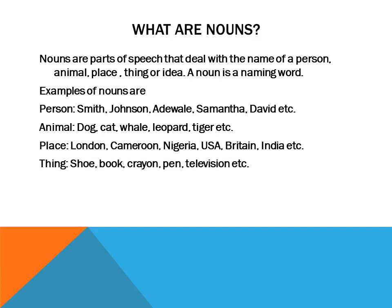Then we have things, like your shoe, book, crayon, pen, and television, and so on. Then, ideas — when we talk about that, we say birthday, wedding, anniversary, and so on. All these are ideas. So don't forget: a noun is the name of a person, animal, place, thing, or idea.